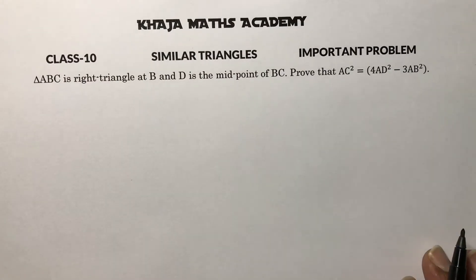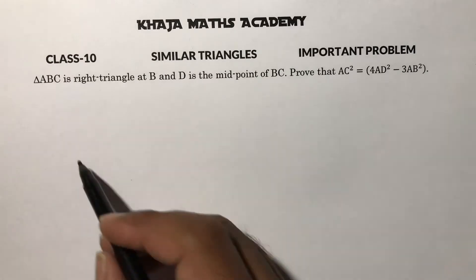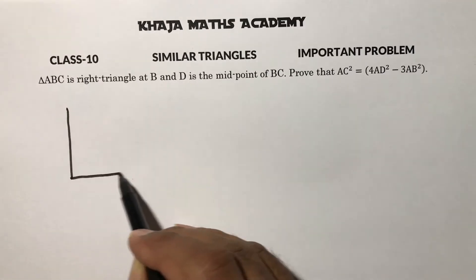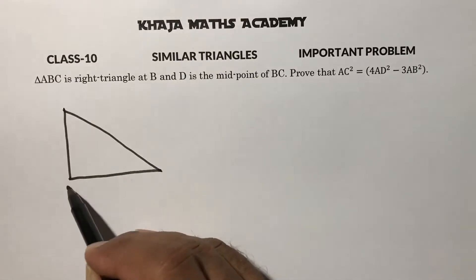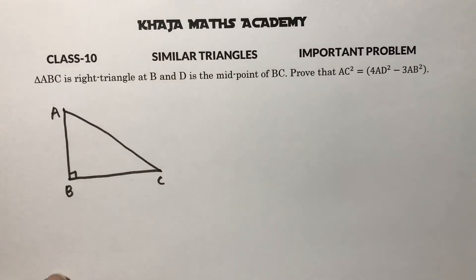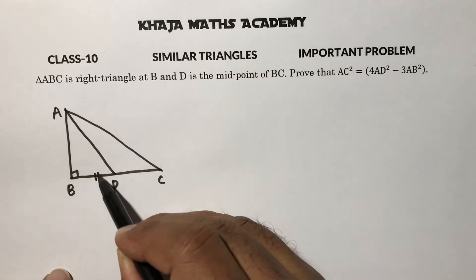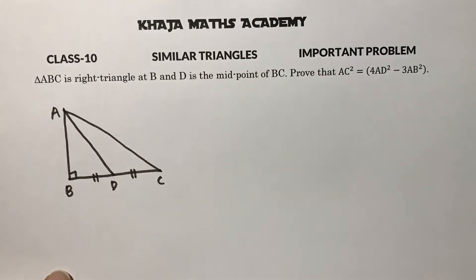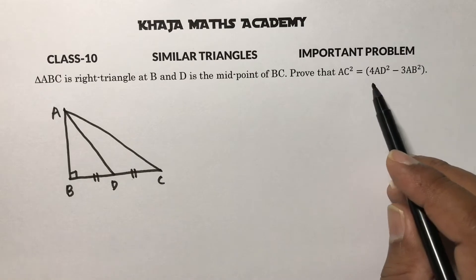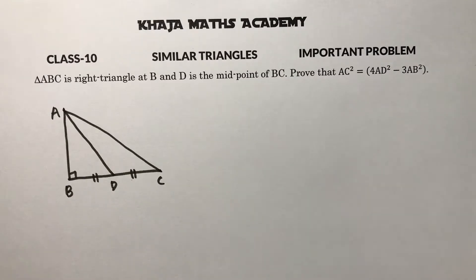This is an important problem on similar triangles. Triangle ABC is a right triangle with the right angle at B. D is a midpoint of BC, so AD is a median. We need to prove that AC² = 4AD² − 3AB².